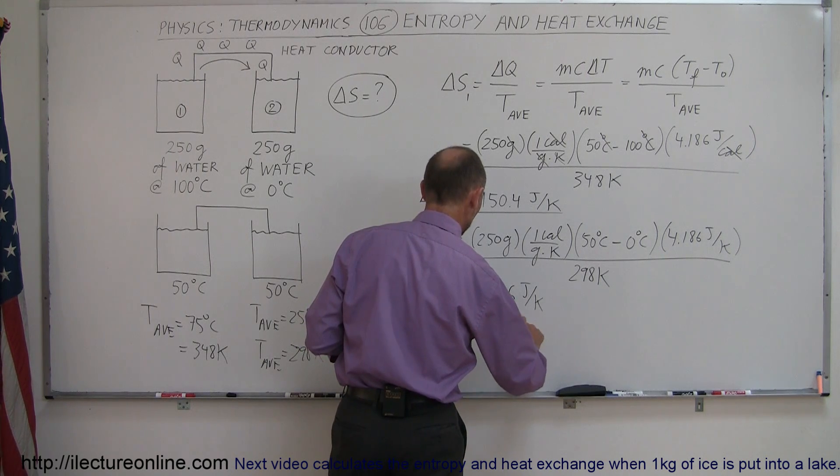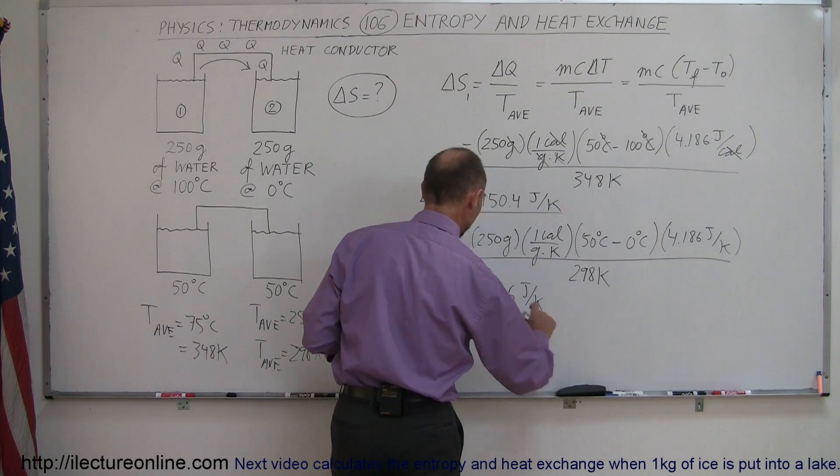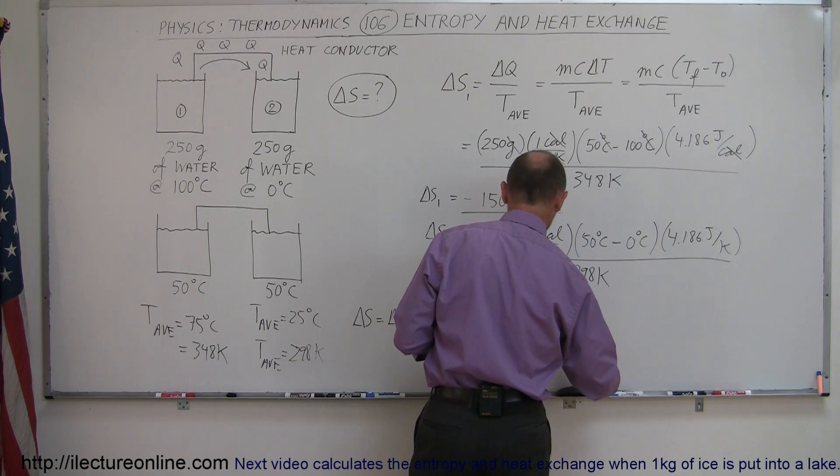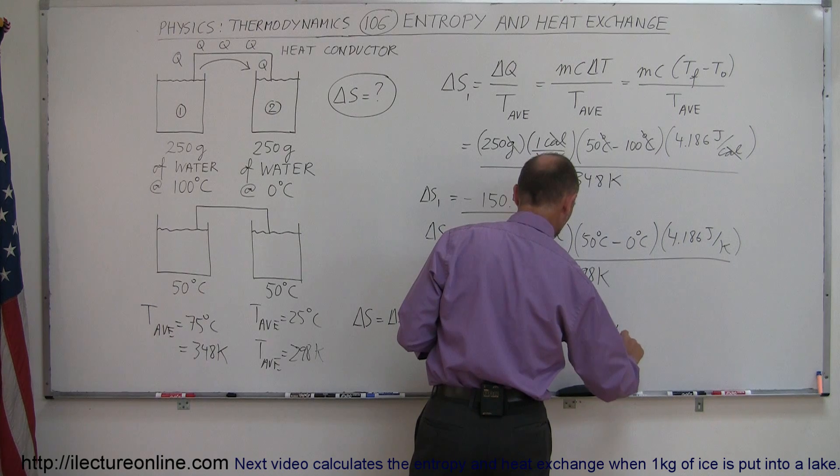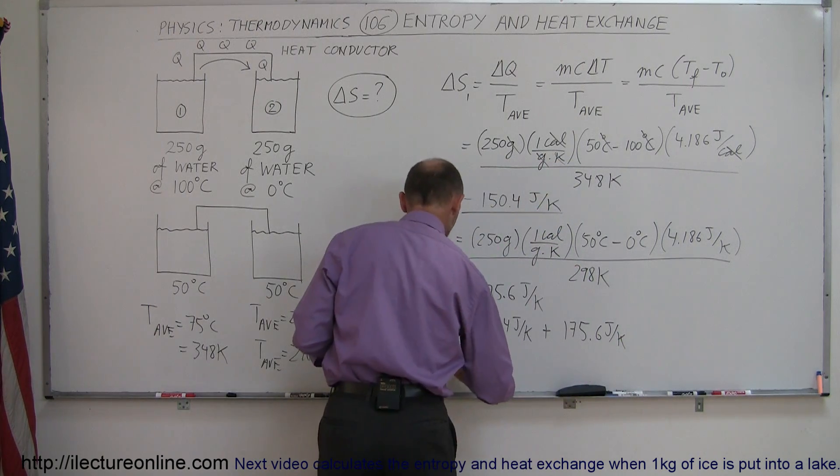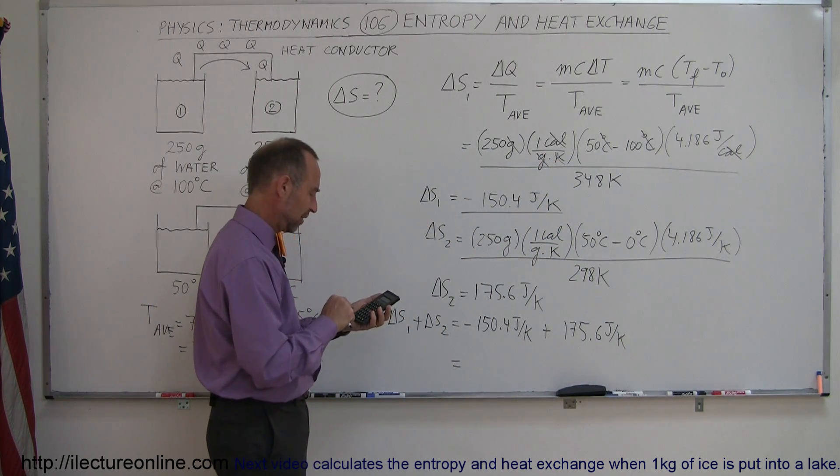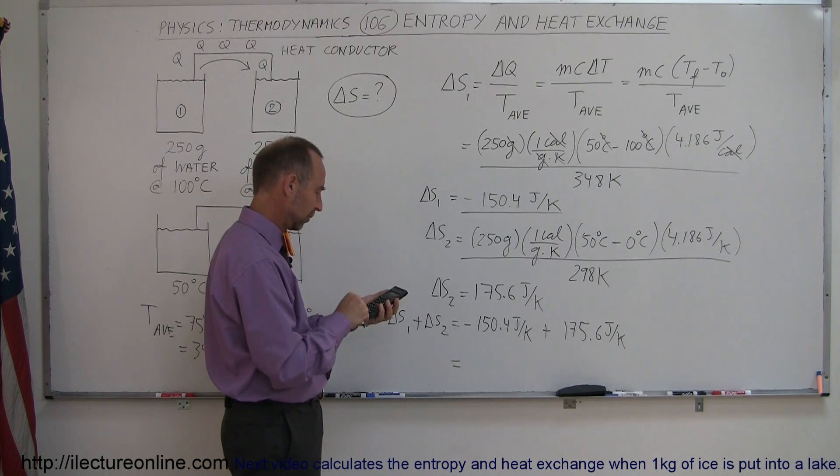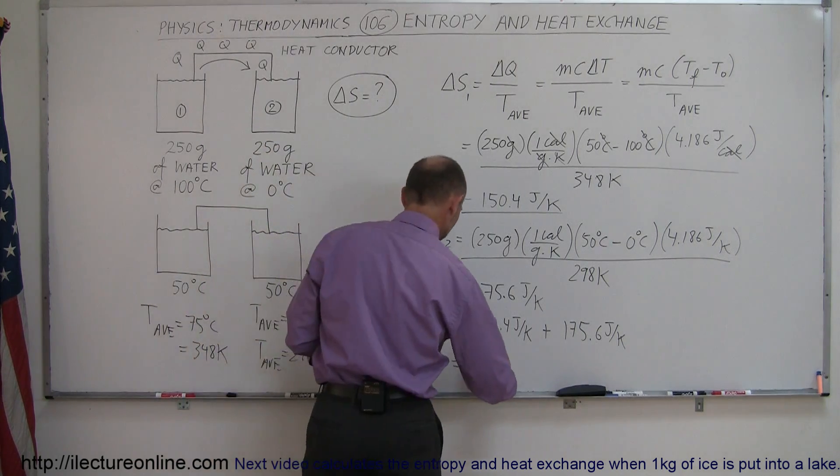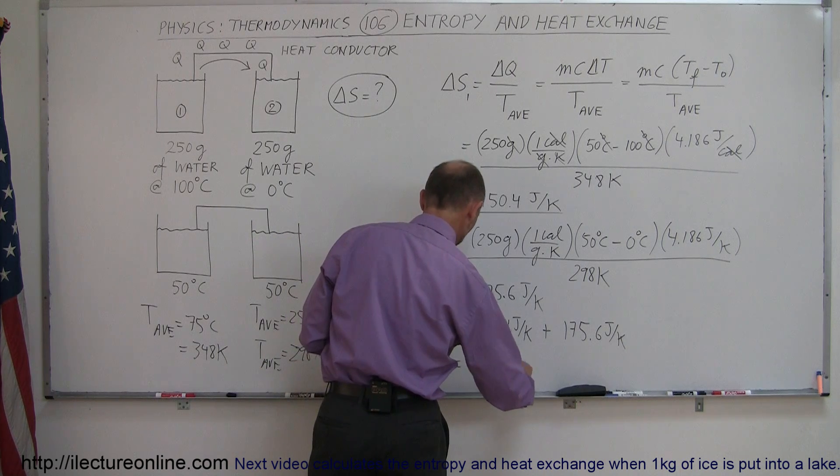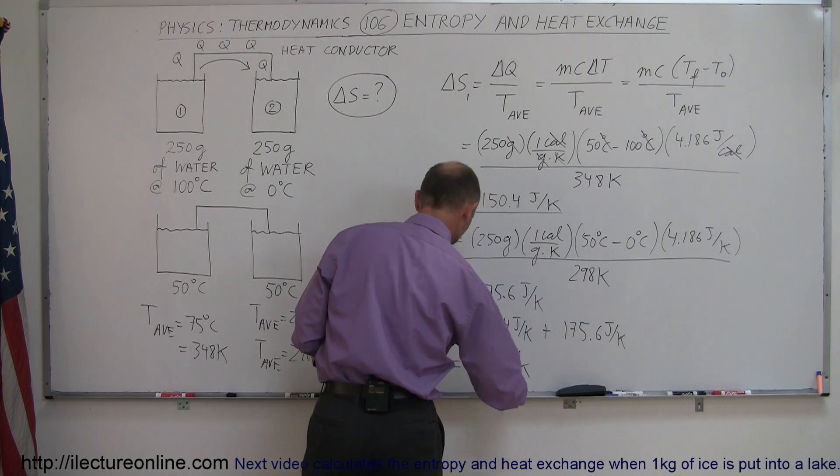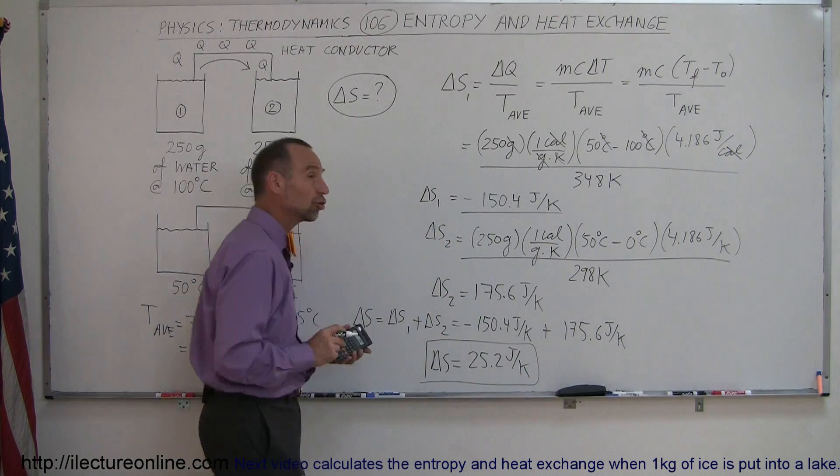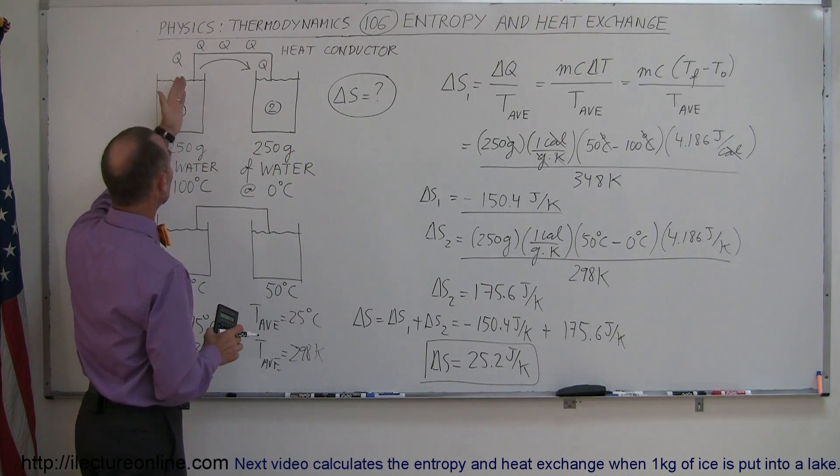So, for the first cup, it was a negative change because heat was removed, 150.4 joules per Kelvin, plus the heat exchange here is positive. So, we have 175.6 joules per Kelvin, and that means we have 150.4 negative plus 175.6 positive. So, we have 25.2 joules per Kelvin.